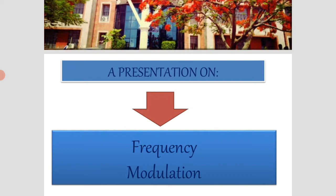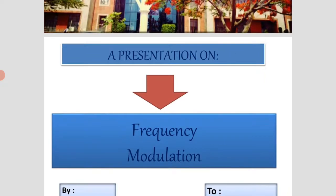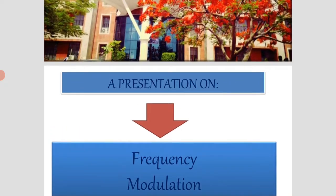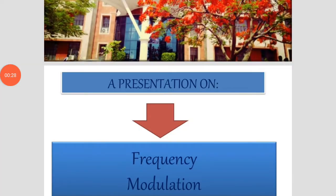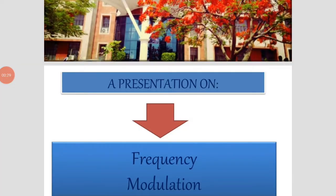In basic electronics, in the last video lecture, we saw amplitude modulation, the first type of amplitude modulation. Now we see the second type of modulation, that is frequency modulation, also called as FM.